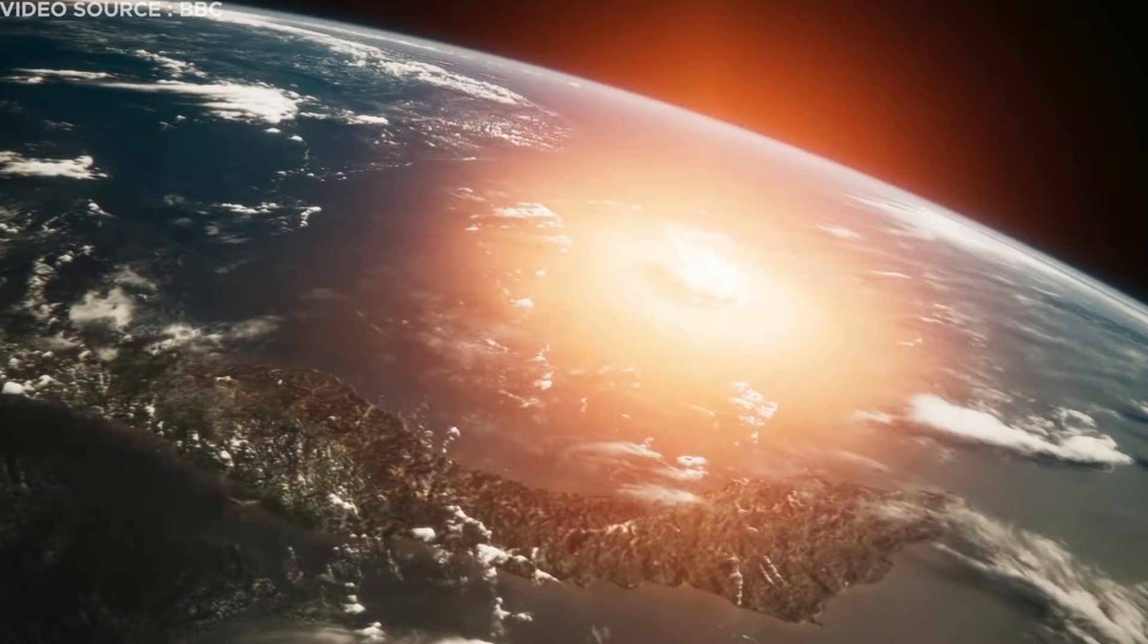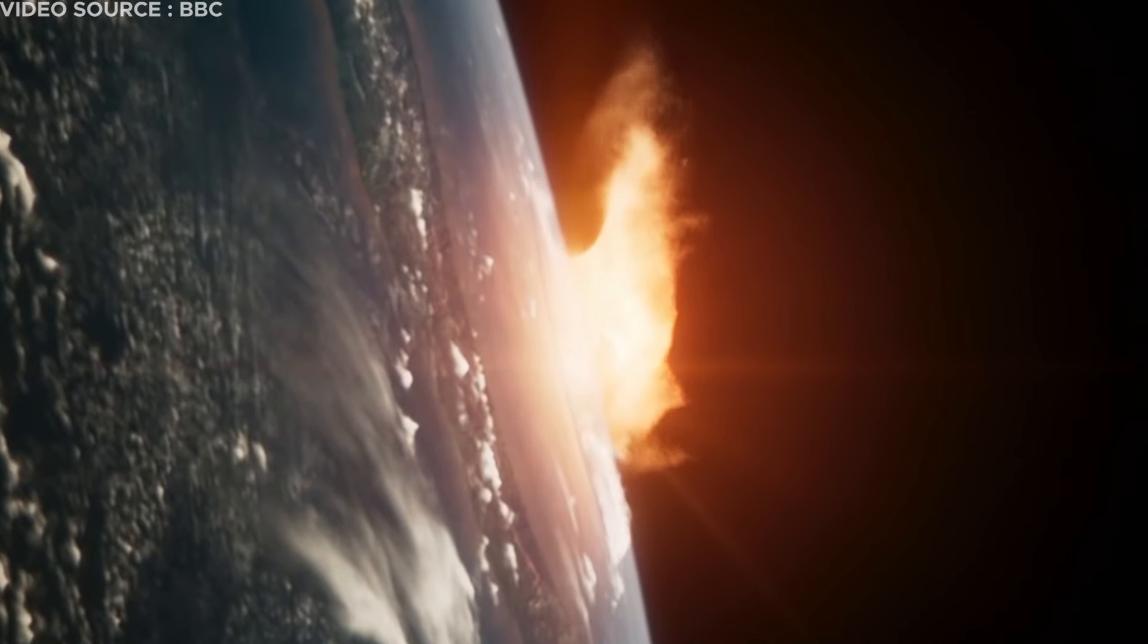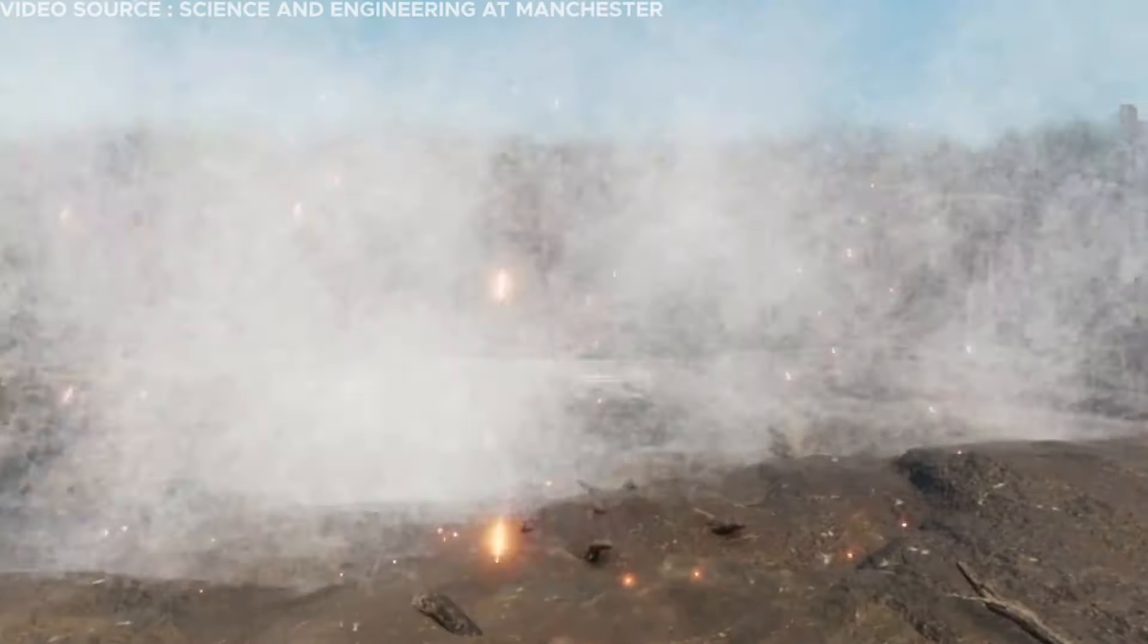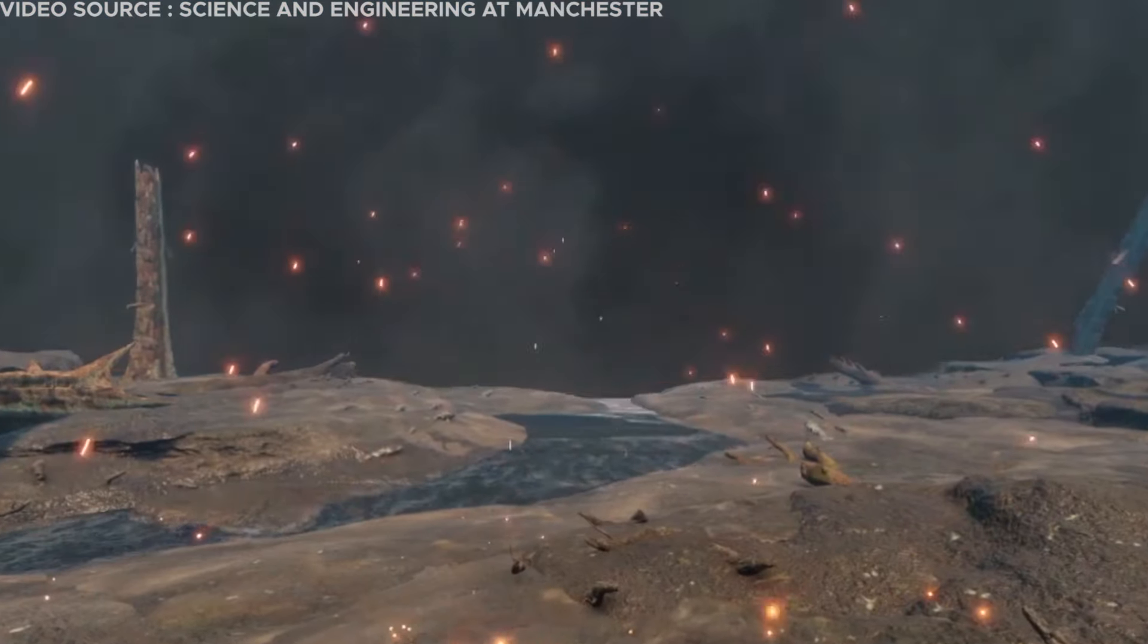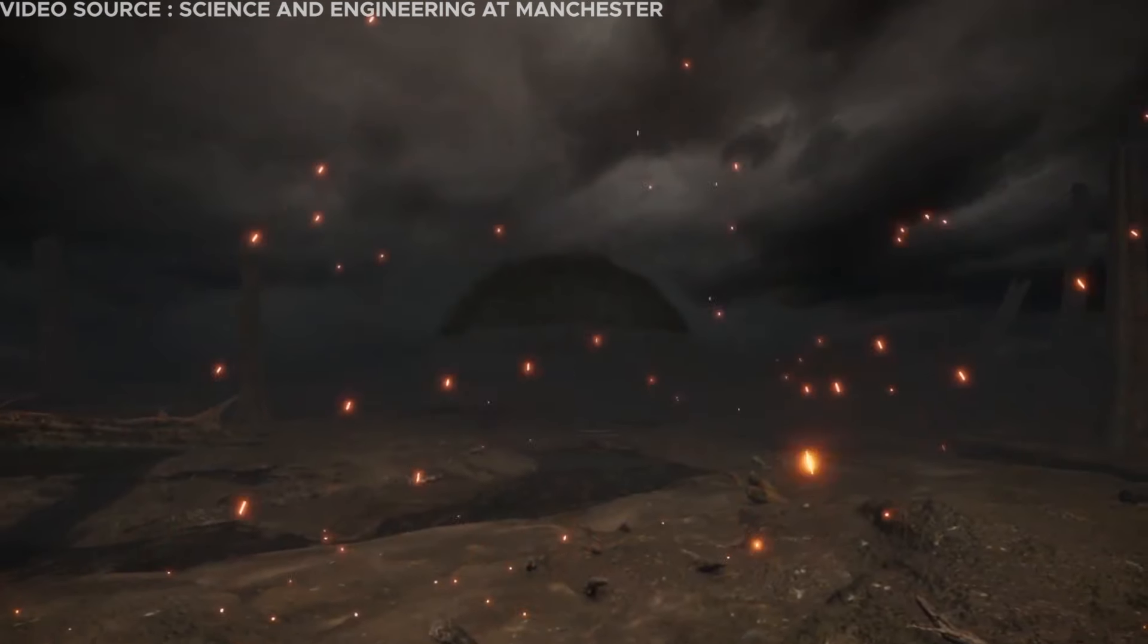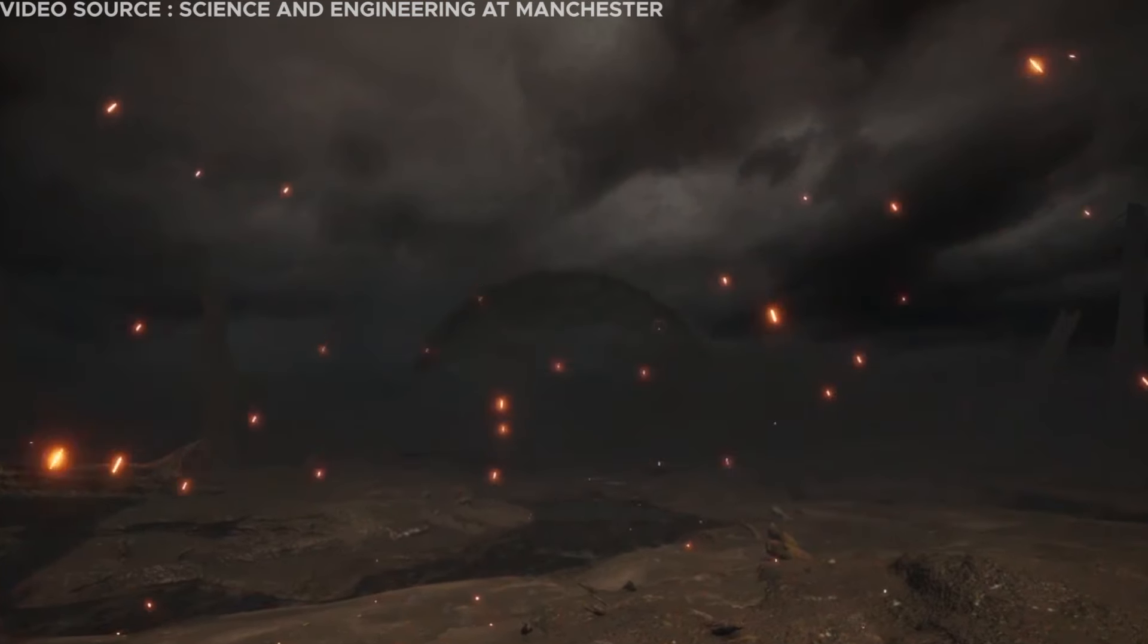According to scientific theories, the asteroid not only created a crater but also generated massive tsunamis and ejected dust and water high into the atmosphere. This atmospheric disturbance reached such heights that it obstructed sunlight completely for nearly two years.